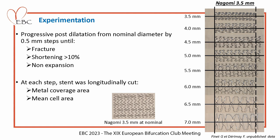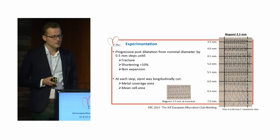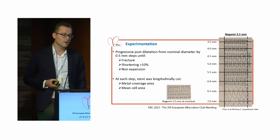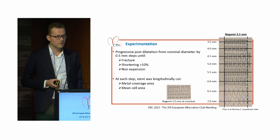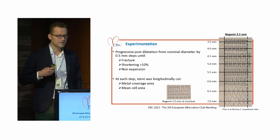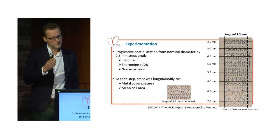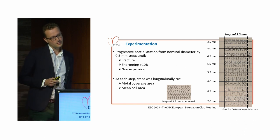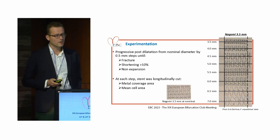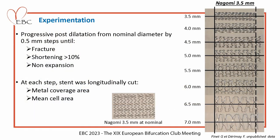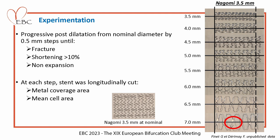We progressively post-dilated stents from the nominal diameter to the limit by steps of 0.5 mm for each company and each stent size. We stopped post-dilation in case of fracture, shortening defined as more than 10%, or non-expansion despite balloon inflation. At each step we cut the stent to calculate by planimetry the metal-covered area and the mean cell area. An example is Nagomi 3.5, post-dilated until 7 mm — at 7 mm we had one fracture, so the limit was 6.5 for us.